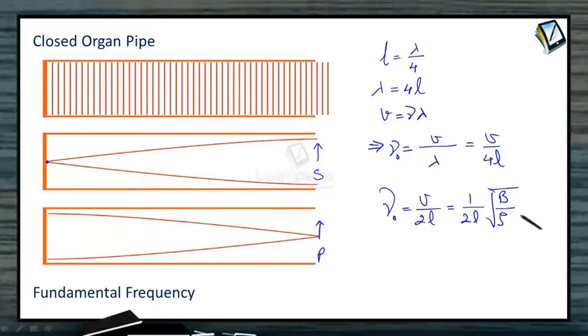V is the speed of sound under root B by rho. B is bulk modulus. We already know about this. So, this is the fundamental frequency.